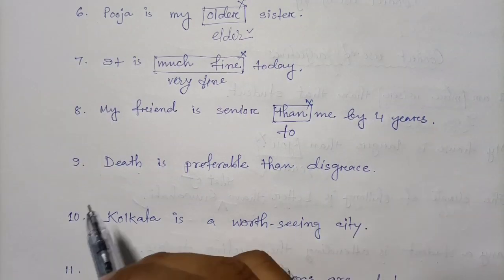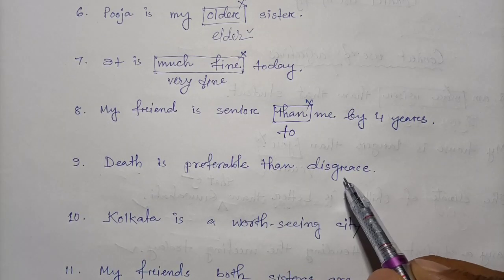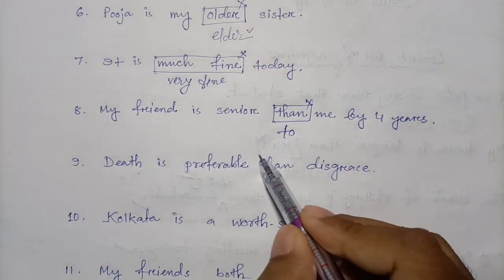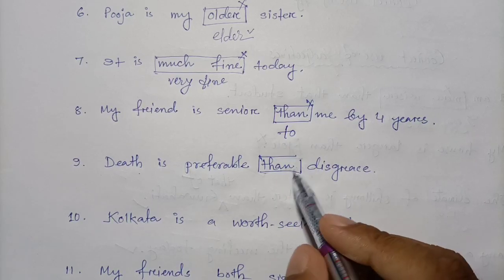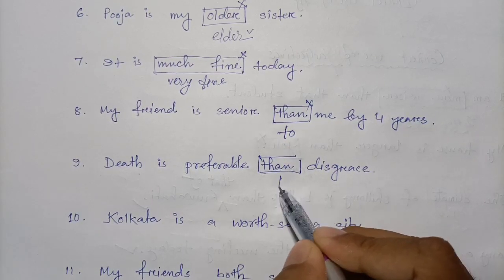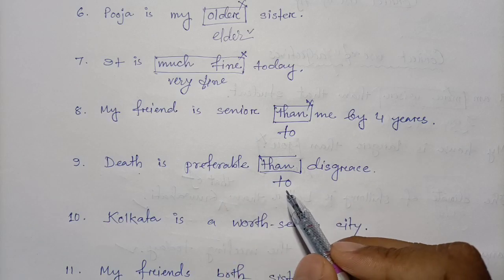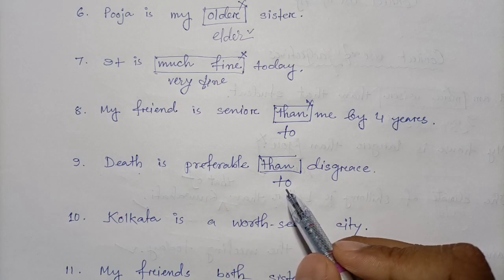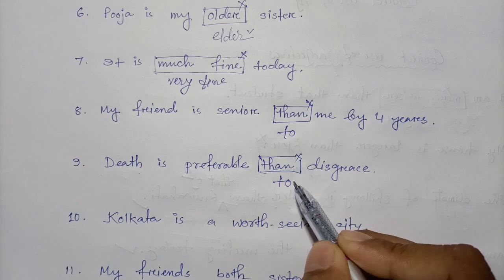Question nine: 'Death is preferable than disgrace.' 'Preferable' is also followed by 'to,' not 'than' — similar to senior, junior, interior, prior. So the correct sentence is: 'Death is preferable to disgrace.'